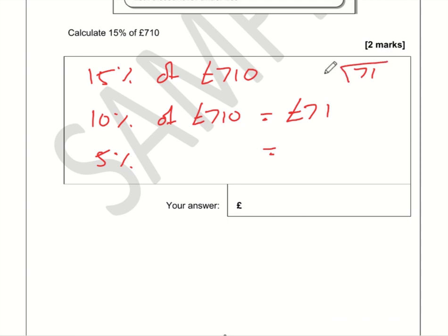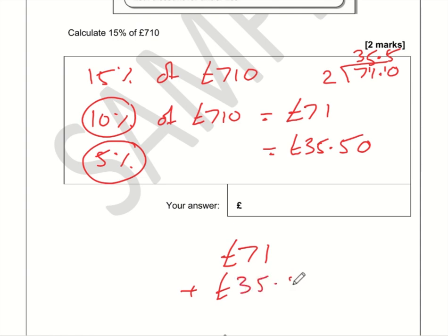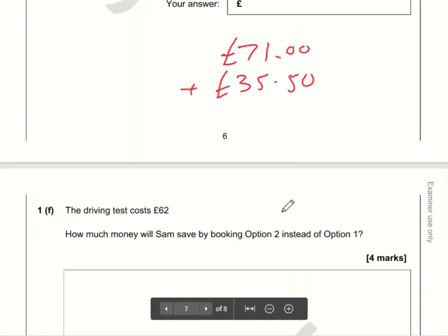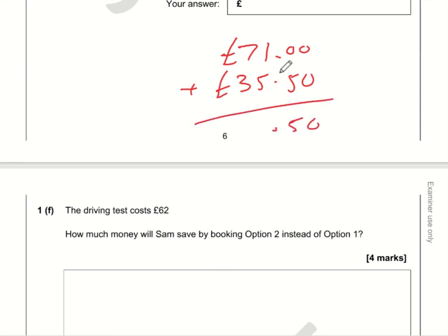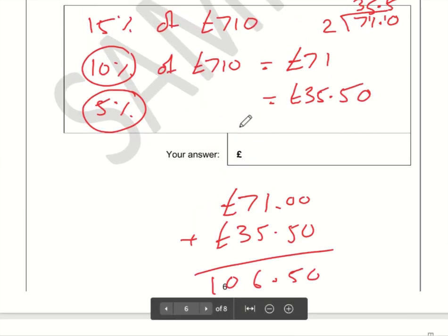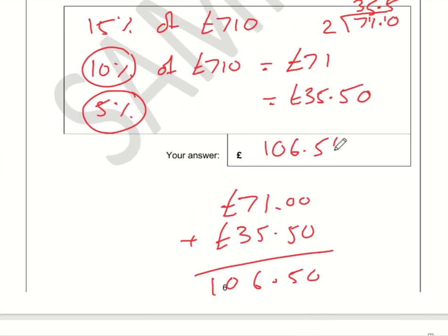So if 10% is £71, then 5% is going to be half of 71. If you can't do 71 divided by 2, we'll need to do a bus stop method. 7 divided by 2 is 3 with a remainder of 1, 11 divided by 2 is 5 with a remainder of 1. Put in a decimal point and a zero so that remainder 1 can be parked onto that zero to make a 10. 10 divided by 2 is 5, so £35.50. So therefore 15% is 10% plus 5%, so it's going to be £71 plus £35.50.